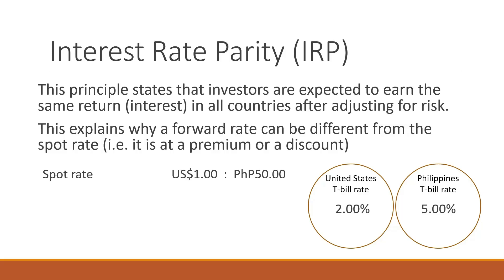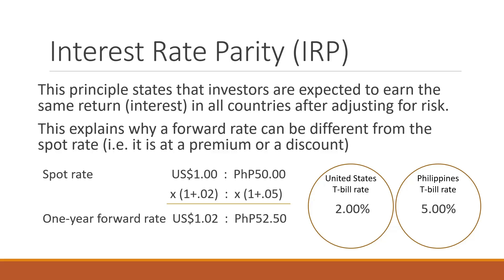Say for example we invested $1 in the US and $1 in the Philippines. In the US, the treasury bill rate is 2%, so after a year we're expected to earn 1 plus 0.02, giving us $1.02. If that dollar was converted to pesos and invested in the Philippines, after a year it will earn 1.05 — so 50 times 1.05 gives us 52 pesos and 50 centavos. According to interest rate parity, whether we invest in the United States or in the Philippines, we should arrive at the same return.